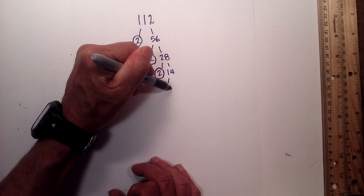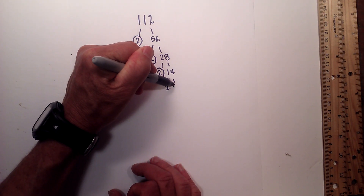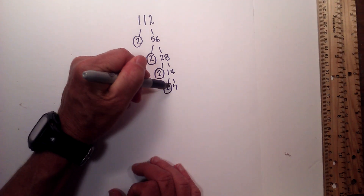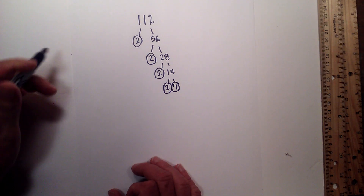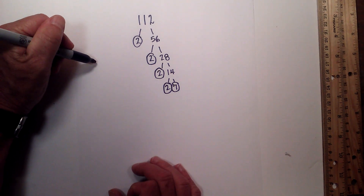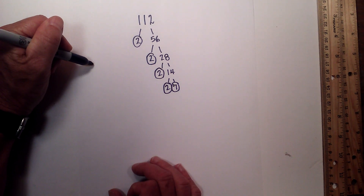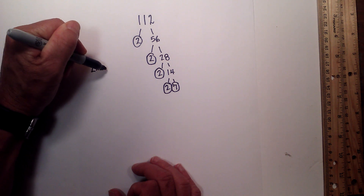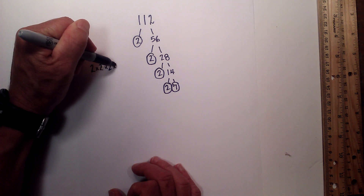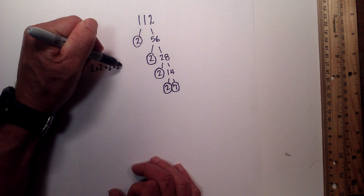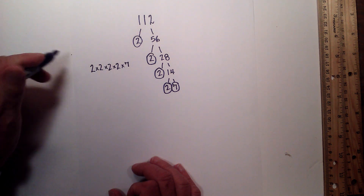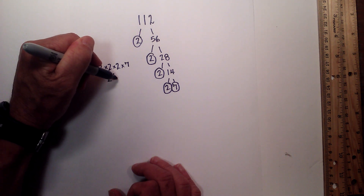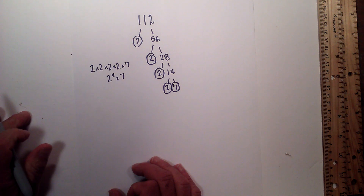And now 2 times 7 equals 14. I will circle the 2 and the 7 because they are both prime. So the prime factorization of 112 is 2 times 2 times 2 times 2 times 7, or 2 to the 4th times 7.